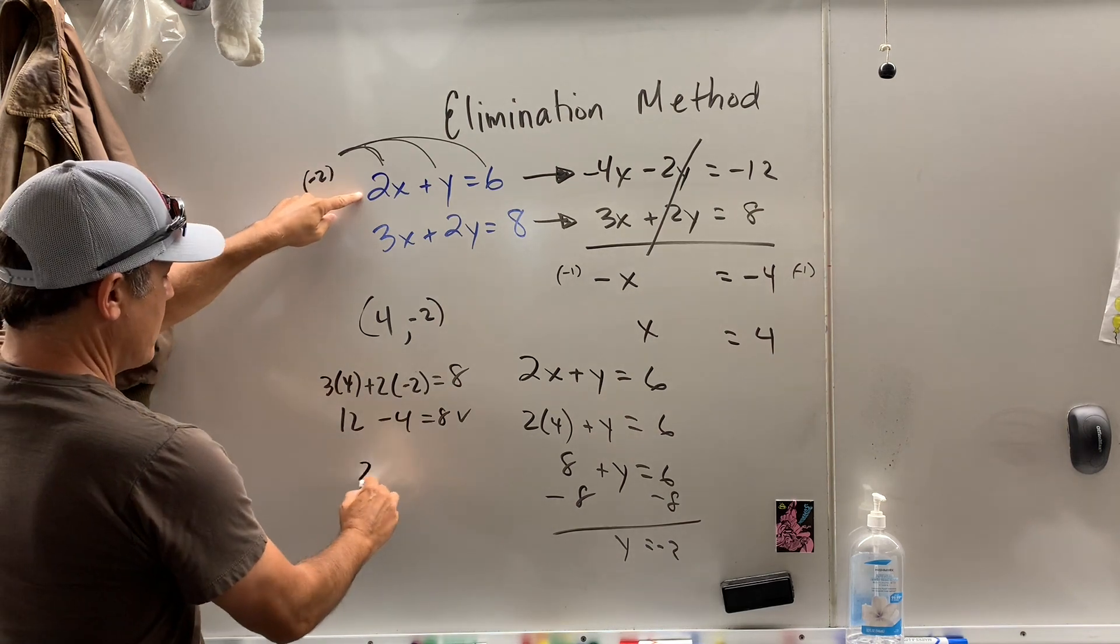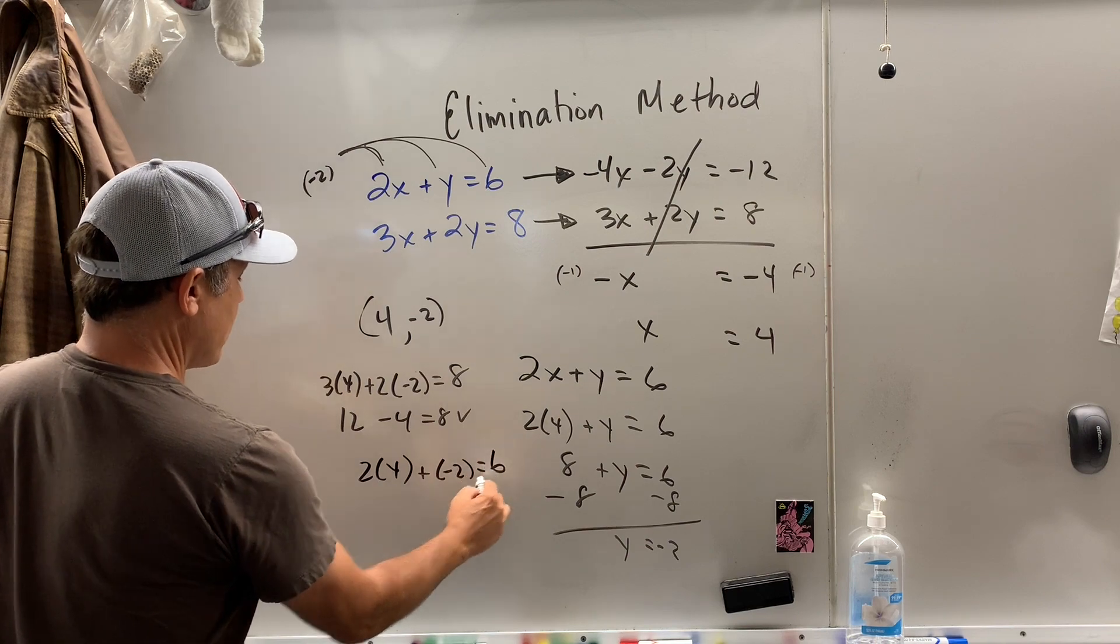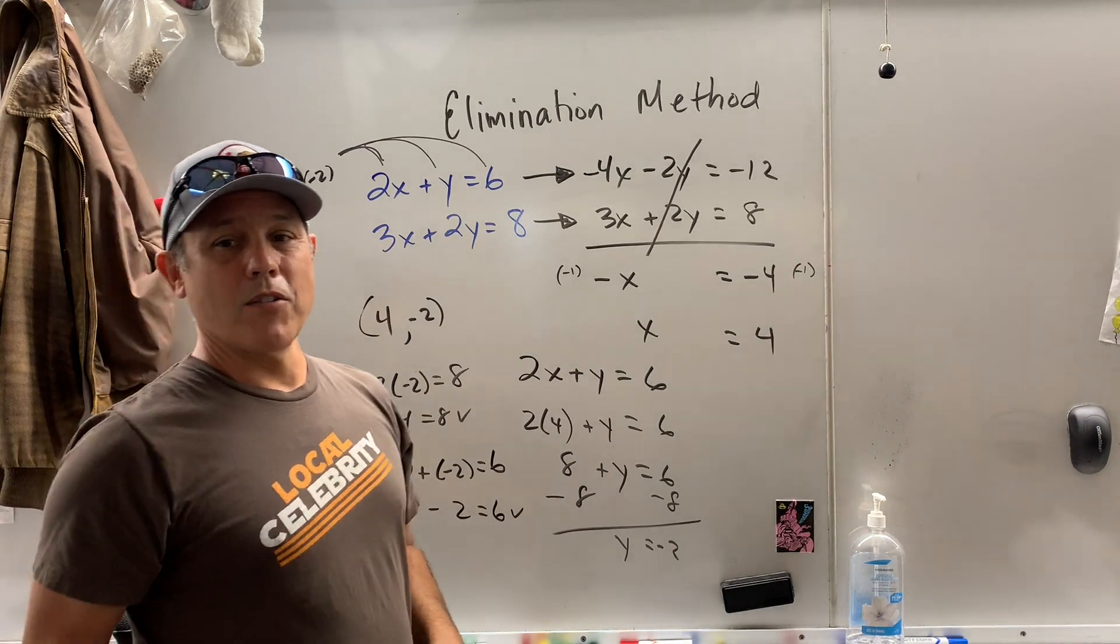Let's check it up here. 2 times 4 plus a negative 2. Does that equal 6? Well, 8 minus 2. Yes, that equals 6. We know we hit the home run.